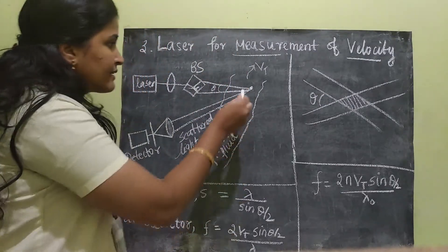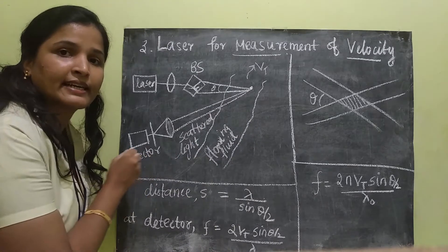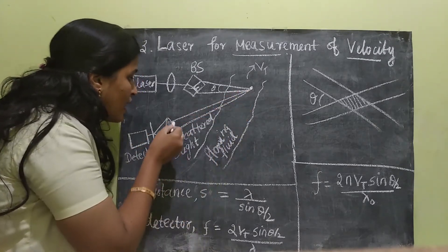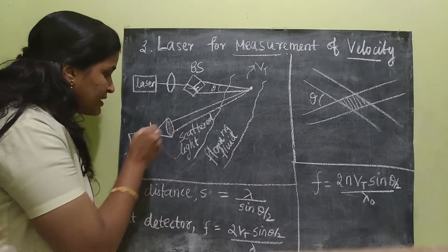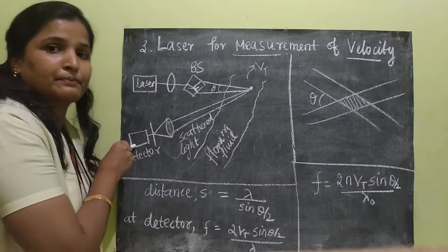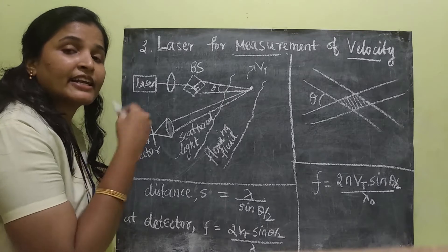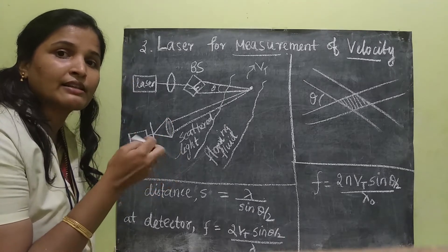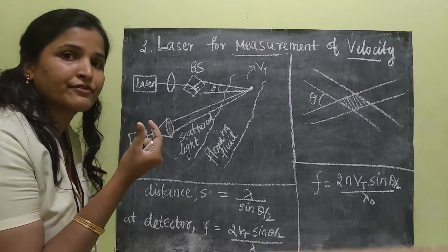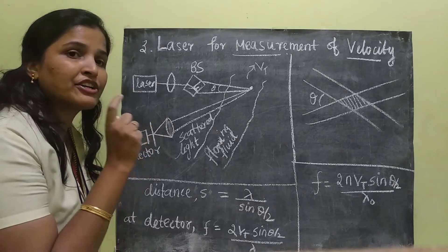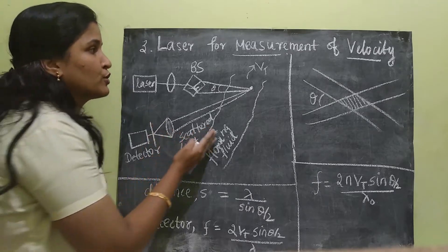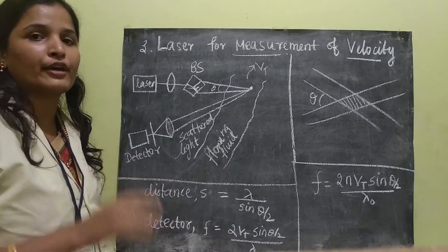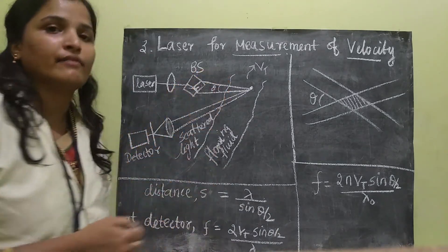At the receiver side, we have a detector and the scattered beam will be collimated or focused onto the detector. At the detector, if we observe the frequency shift, that shift will be proportional to the velocity flow. That is the working of this measurement of velocity.